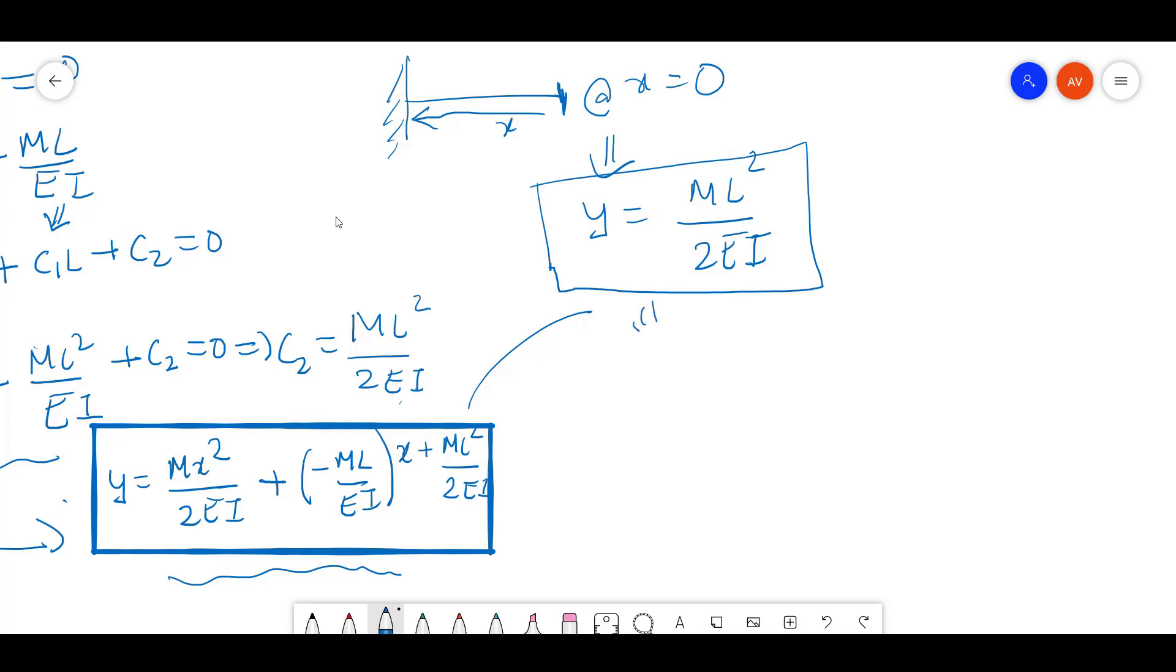Now let's use this value in this particular problem. You are given that L equals 1 meter and EI equals 200 Newton meter squared.